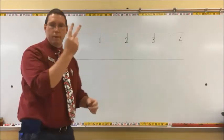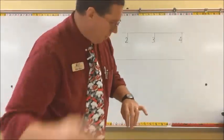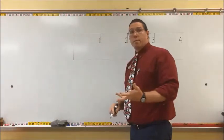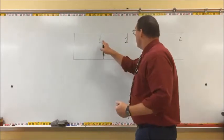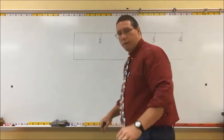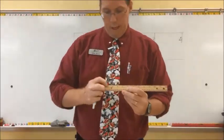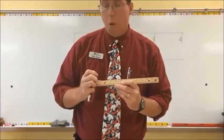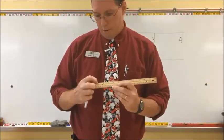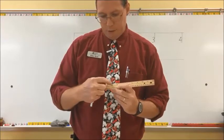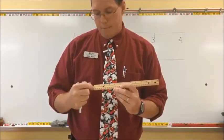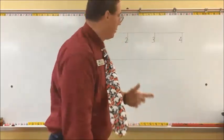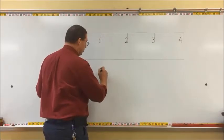The second consideration - the second issue that people have a problem with is fractions. Because rulers have all these little hash marks on them, these little hash marks that tell you portions of inches. Sure, one inch, two inch, three inch, four inch, five inch - that's easy. But what about the little hash marks? What about the fractions of inches? You need to understand something about a fraction.